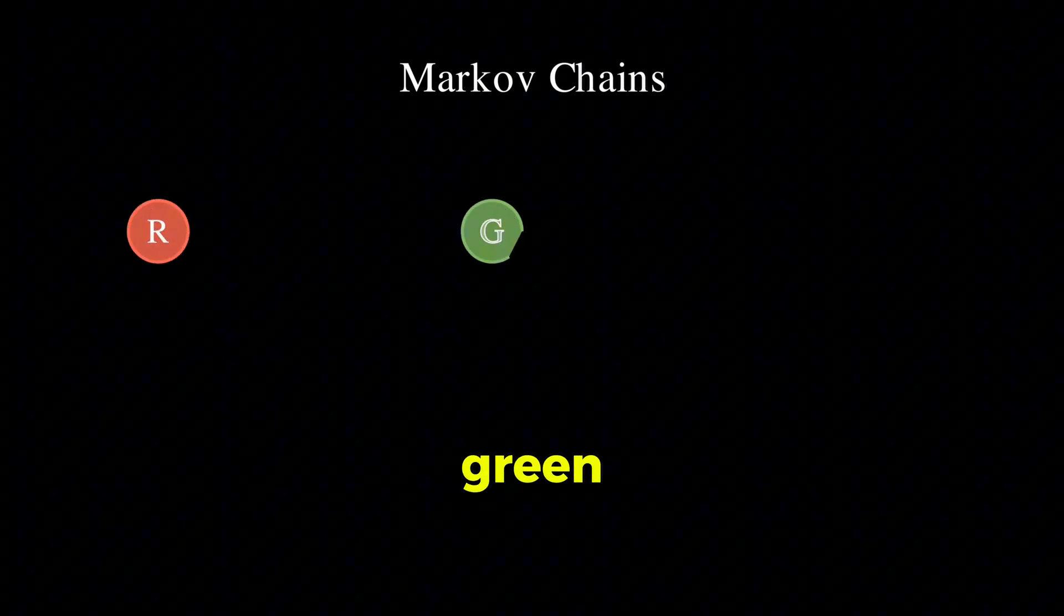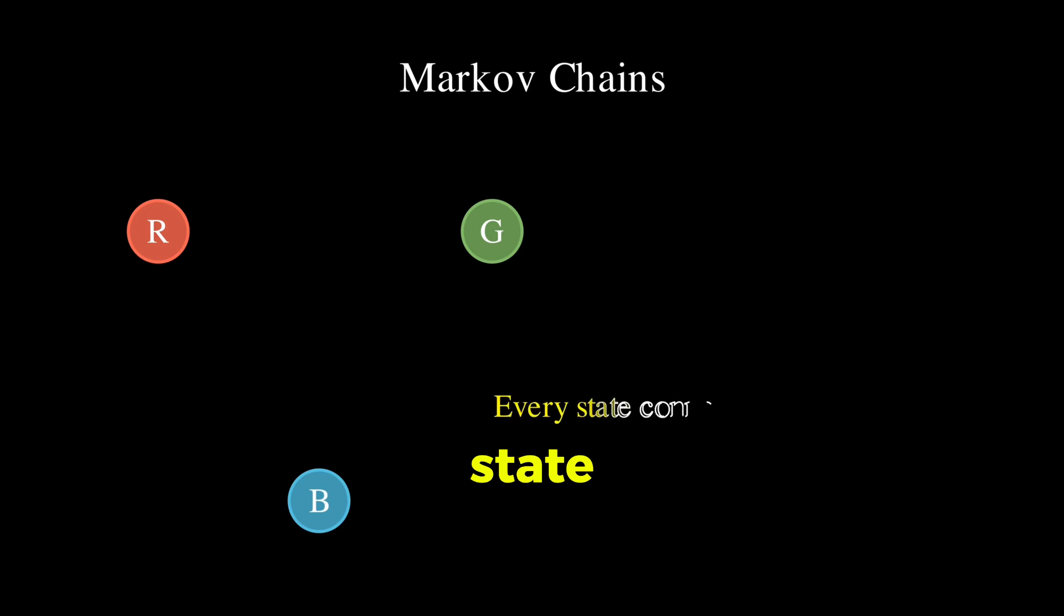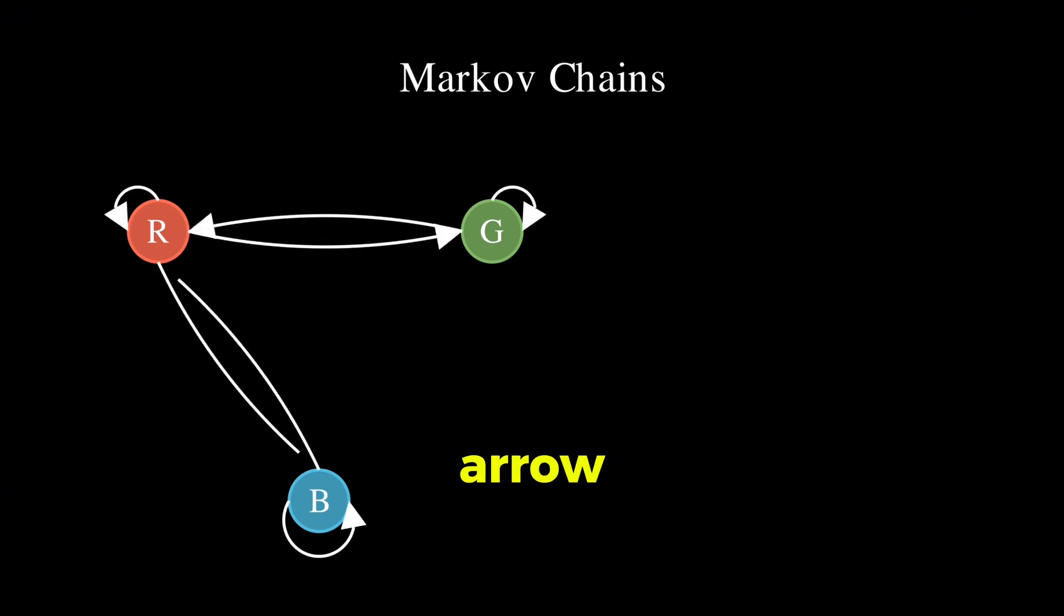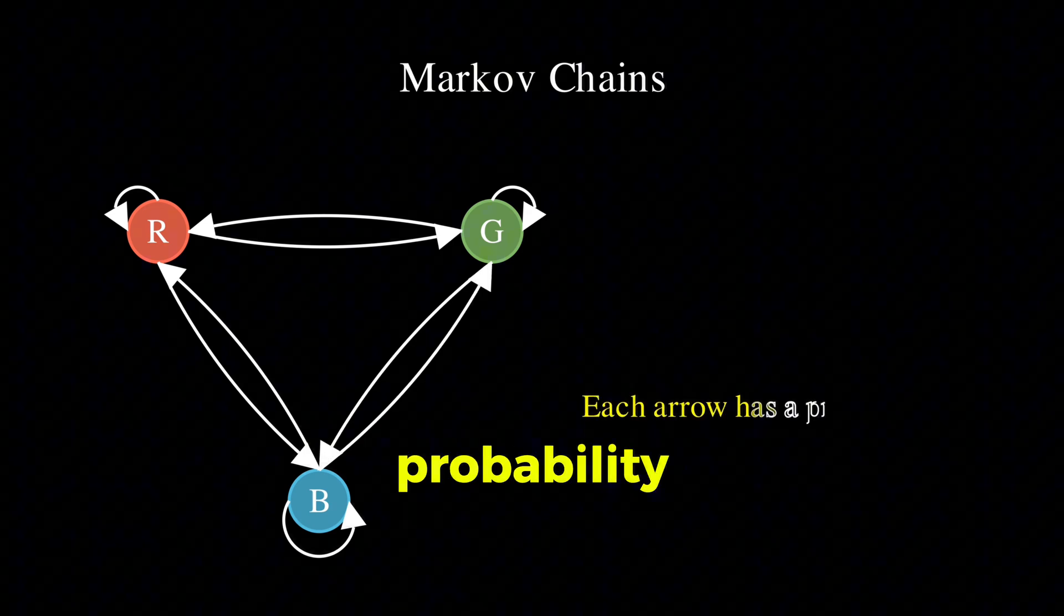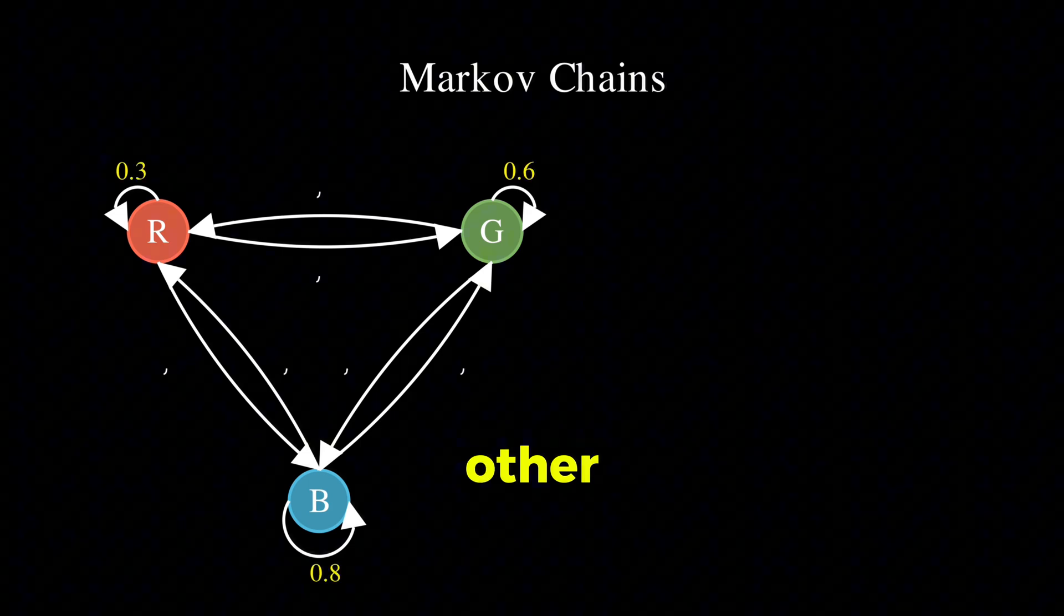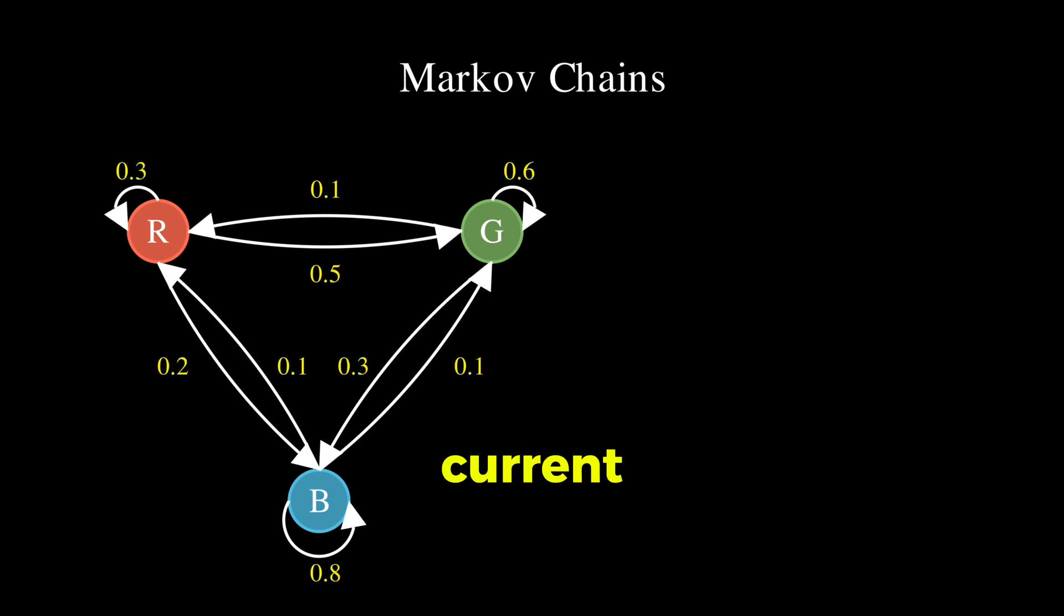Imagine we have three possible states, red, green, and blue. Every state connects to every other state including itself, and each arrow also has a probability which shows what's the chance of moving from one state to the other or remaining in the current state.